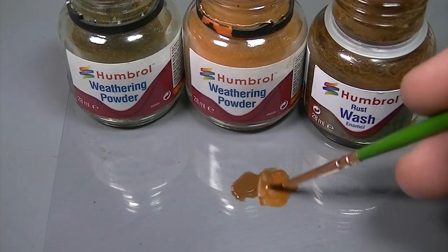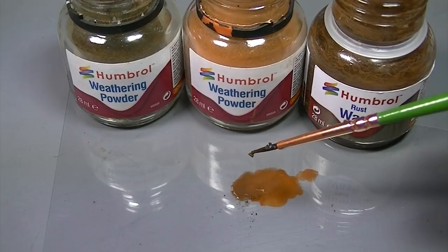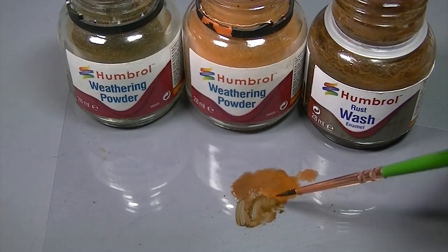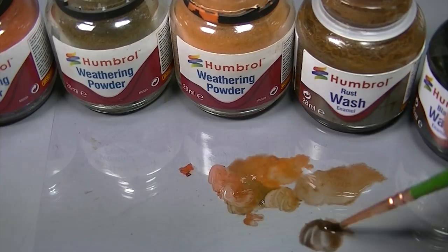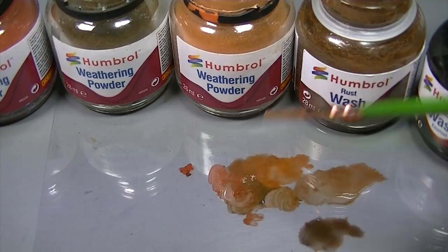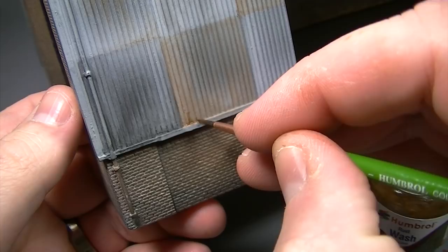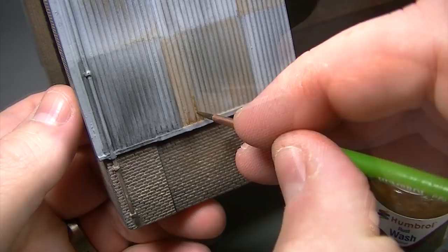Humbrol weathering powders and Humbrol enamel washes work as a partnership, the weathering powders providing the variation in colour and the enamel washes providing the fixing element. Just a small amount of weathering powder when added to the rust coloured enamel wash will diversify the colour massively and give you a variety of shades. Throw in some of the other colours of enamel wash and suddenly you have a wide and diverse palette of colours to apply to the surface of the model and application is as easy as we've already shown you in this video.